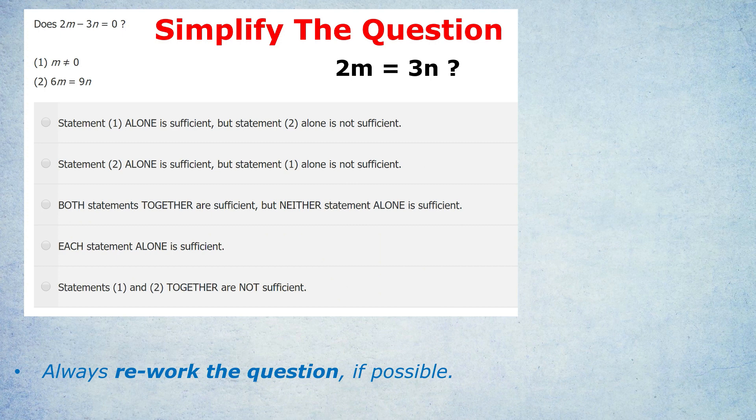It's quite important to keep the question mark because remember, we don't know that 2m equals 3n. That's just what the question is asking us. Now, because we've reworked the question, we've simplified it slightly, we can maybe spot which statement is sufficient. m not equaling zero doesn't tell us if 2m equals 3n. First of all, it doesn't tell us anything about n. So that statement's out.